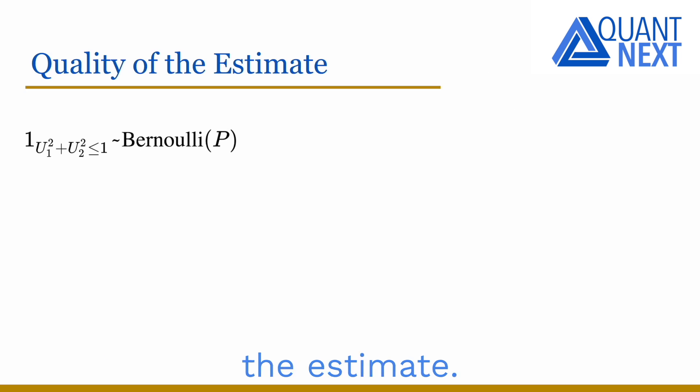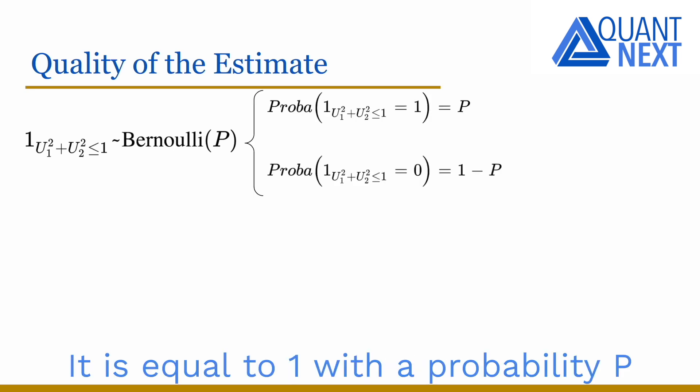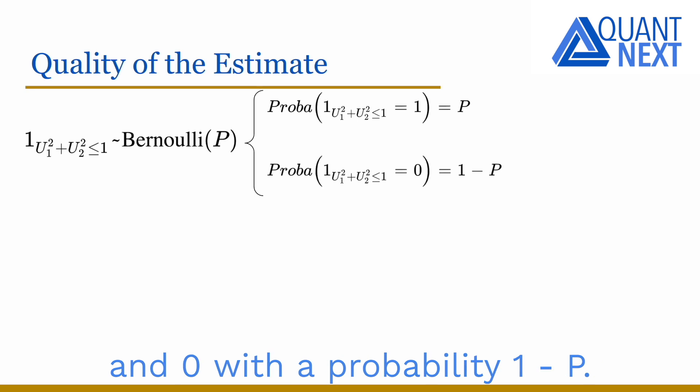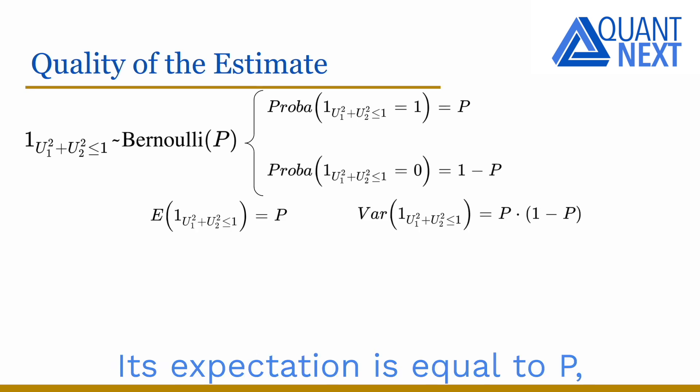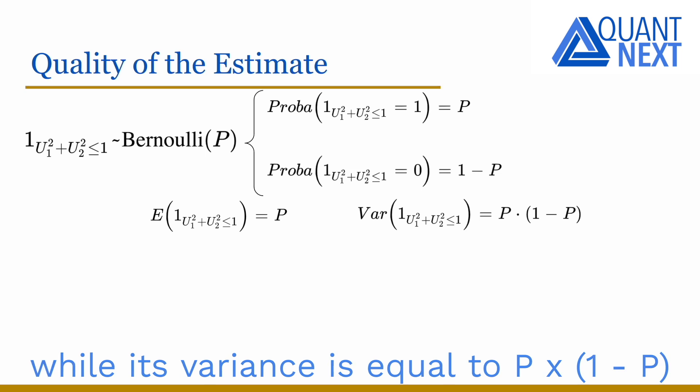We will look now at the quality of the estimate. For that we consider a random variable which is equal to one when the sum of the square of the two uniform variables is below one and zero otherwise. It follows a Bernoulli distribution with parameter p. It is equal to one with a probability p and zero with a probability one minus p.